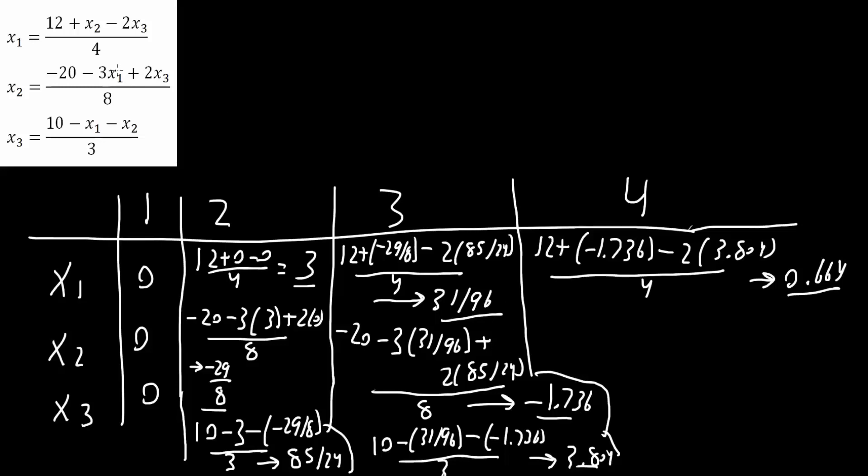Same idea. x1 is now 0.664, but x3 remains the same at 3.804. So we get negative 20 minus 3 times 0.664, plus 2 times 3.804, divided by 8. This answer would give us negative 1.798.